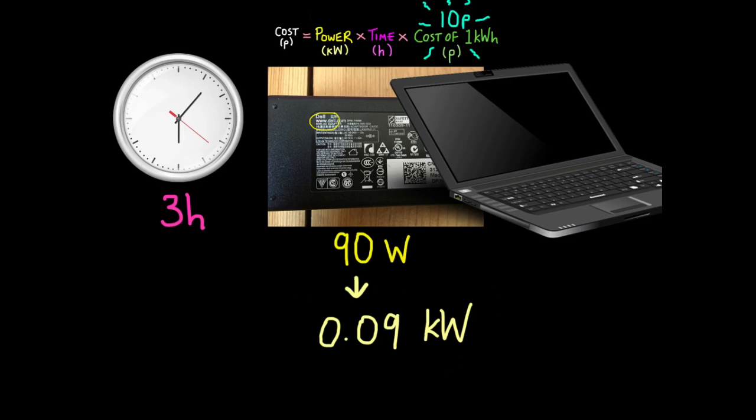Now let's say we've been using the laptop or it's been left on for 3 hours. And let's make the cost of 1 kilowatt hour really simple, just 10p, which isn't too unrealistic. So you simply multiply 0.09, because remember we're dealing with kilowatts, not watts, times 3 times 10, which will give us a cost of 2.7p over the 3 hour period we were using our laptop. So not too bad.